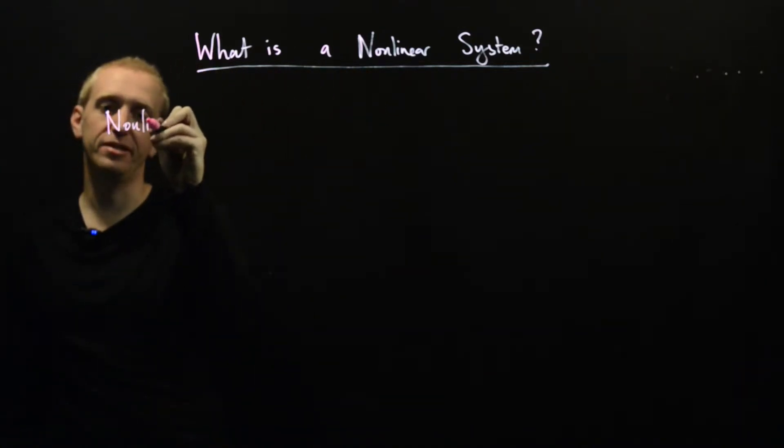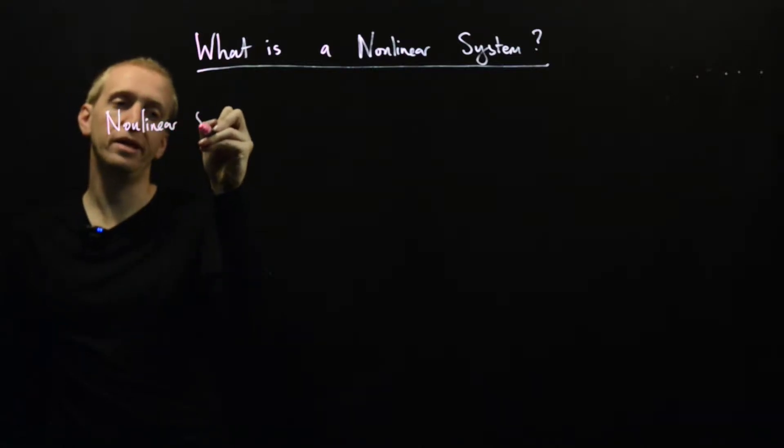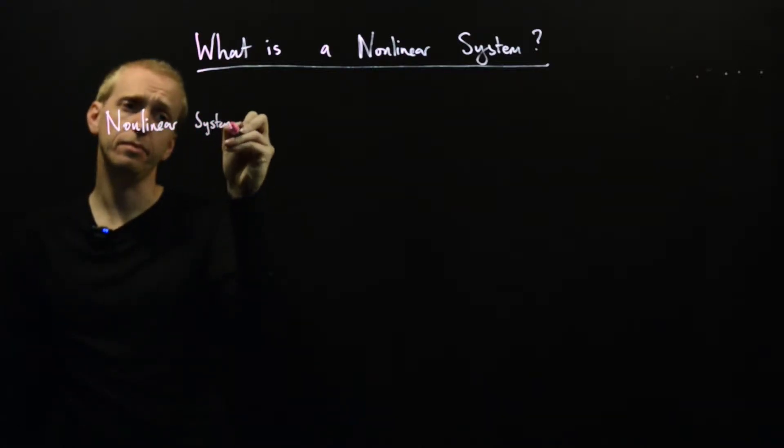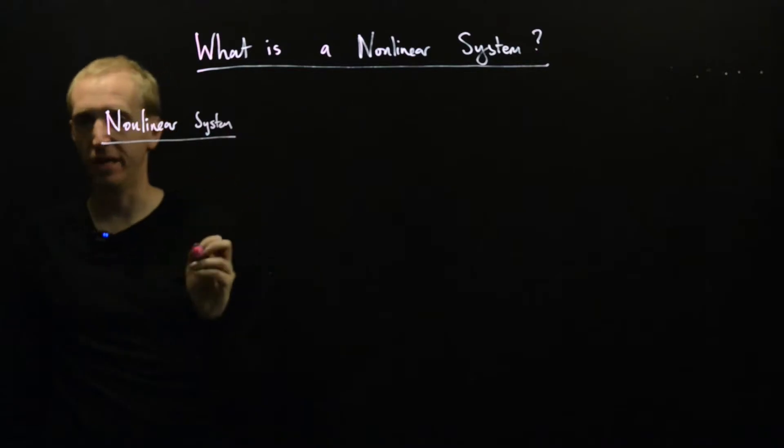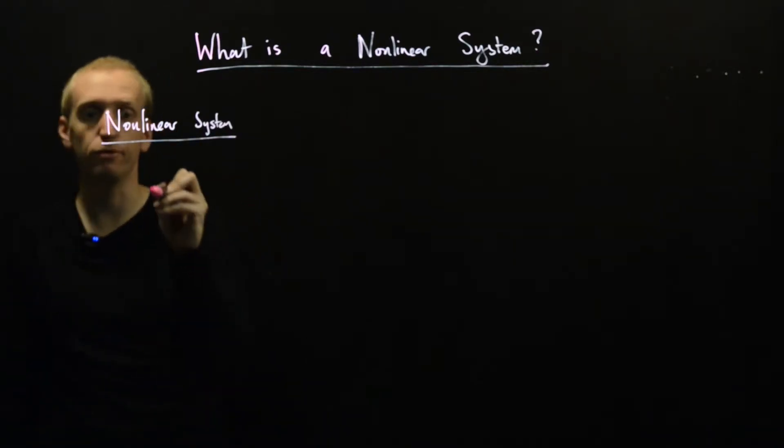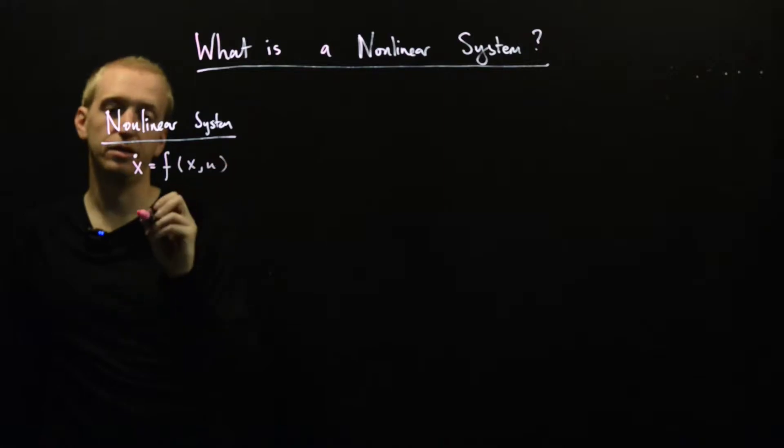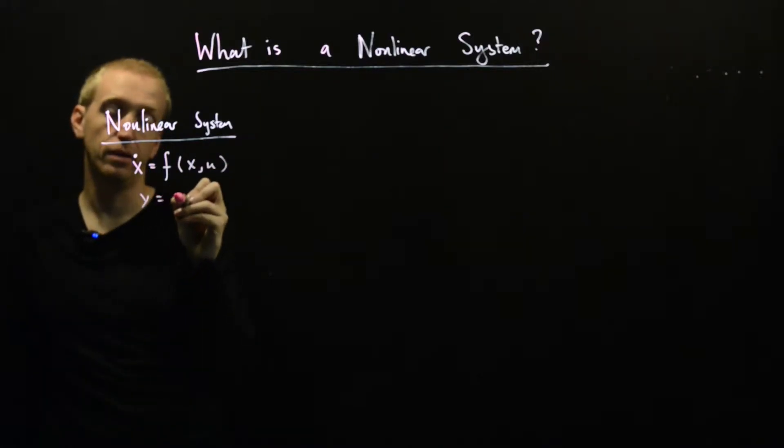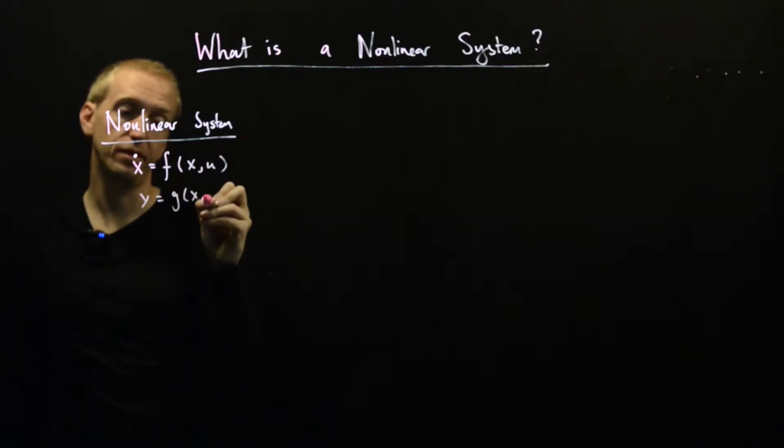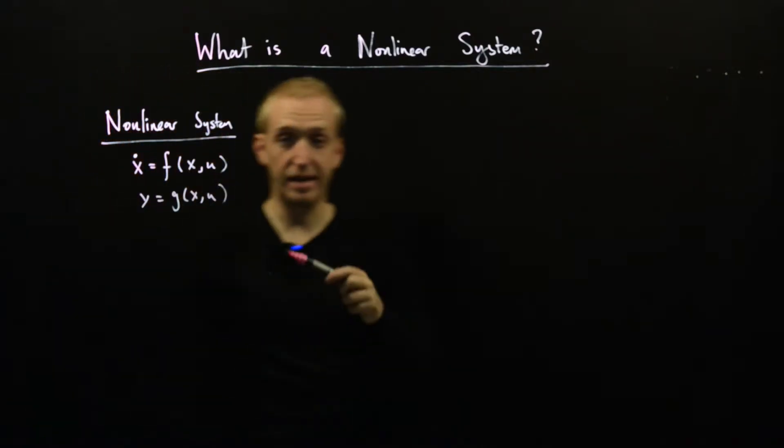For the purposes of this course, a nonlinear system is going to be a differential equation on the following general form: x dot is equal to f of x, u, and y is equal to g of x, u.